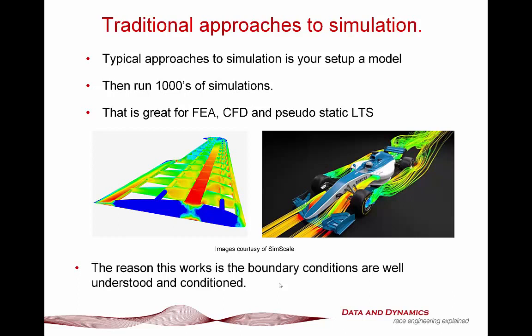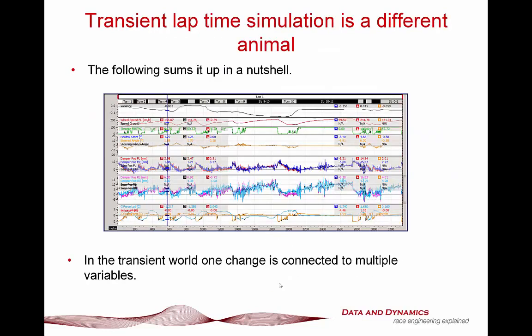That is why that iterative approach works really well for traditional simulation methods like FEA, CFD, pseudostatic lap time simulation, and even transient track replays — whether using the Chassis Sim track replay feature or equivalent tools to examine things like damper settings and contact patch load variation. The shaker rig toolbox within Chassis Sim is another example. However, running a thousand sims and cherry-picking best results doesn't work very well for transient lap time simulation, because it's a fundamentally different animal.